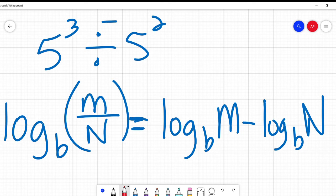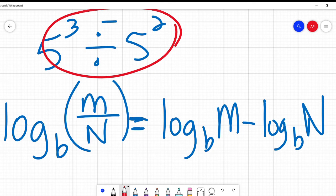Just like with the exponents, because I said these are cousins. They're related to each other. 3 minus 2, 5 to the power of 1, or just 5.